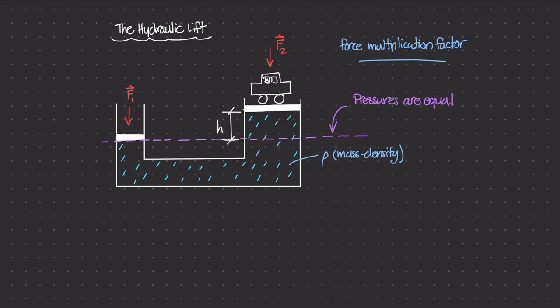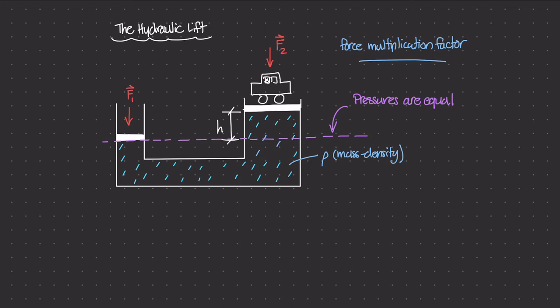What if we figured out a way to get F2 in terms of the areas of the pistons as well as the force F1 being applied on piston one? That will actually explain what the force multiplication factor is in hydraulic systems. I'll label two points along this horizontal line: at piston one, right where F1 is applied, the induced pressure is P1. Along the same horizontal line at piston two, there is a point P2. Because these two pressure points are along the same horizontal line, P1 equals P2.